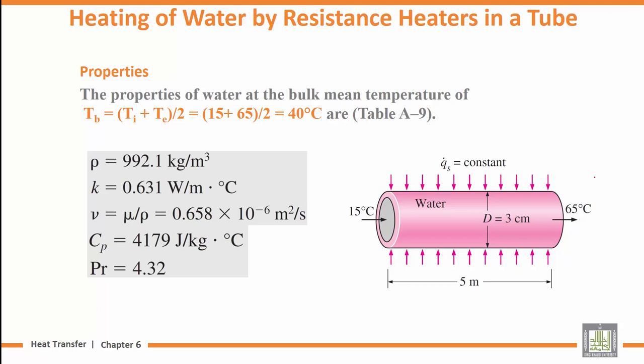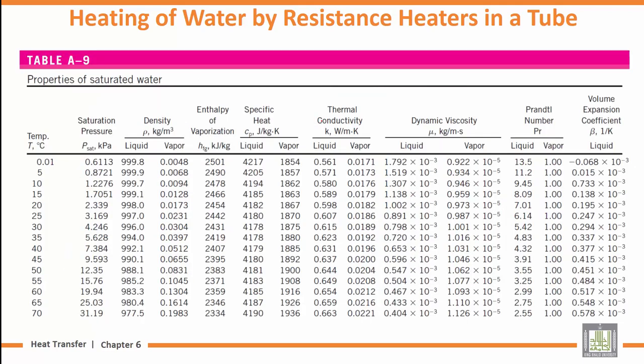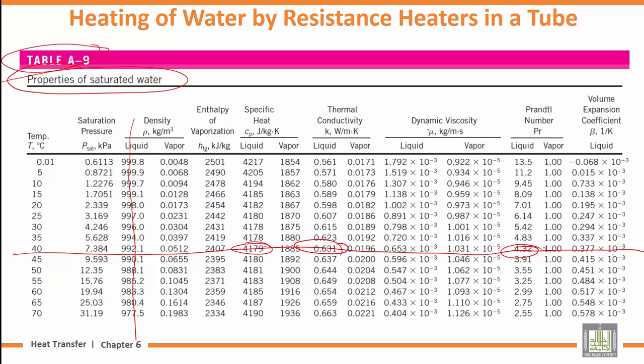First, let's take the bulk mean temperature between 15 and 65. Let's take 40 degrees Celsius. Go to table A9 and take all the properties - enthalpy, specific heat, thermal conductivity, Prandtl number, dynamic viscosity - everything available at 40 degrees.